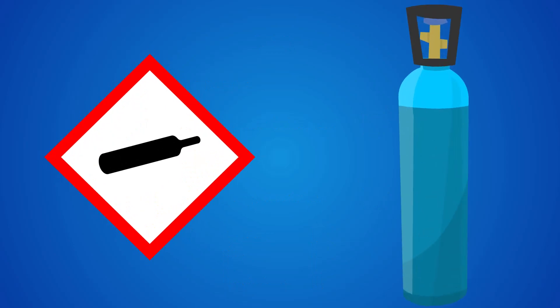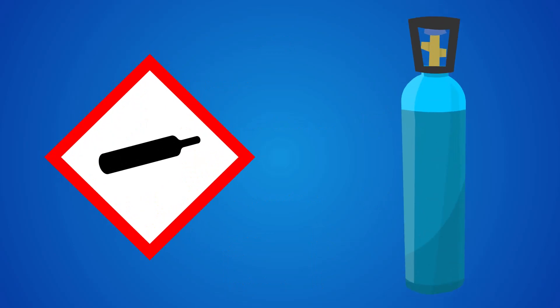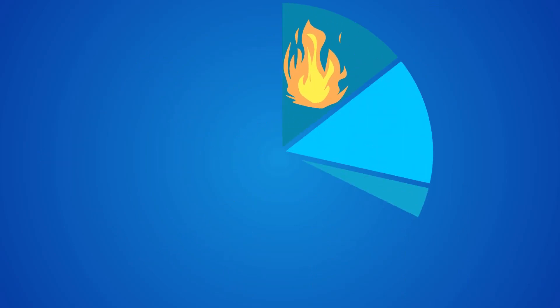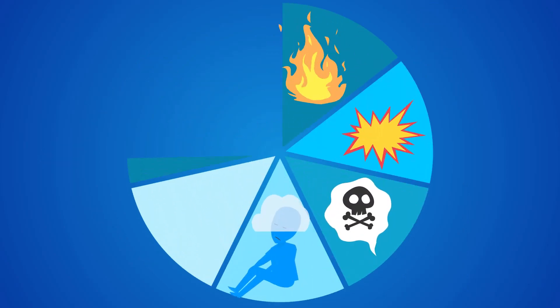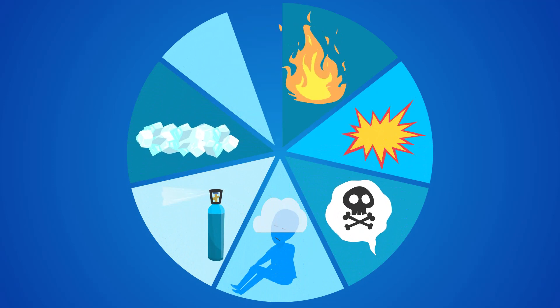The gas cylinder silhouette signifies pressurized gas. The critical hazards are fire, explosion, poisoning, asphyxiation, injection injuries, cold burns, and cylinder mishandling.